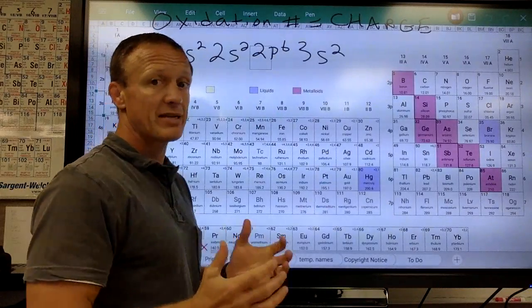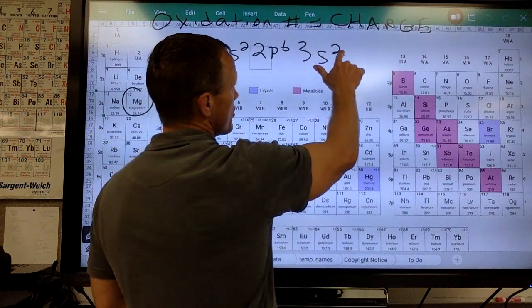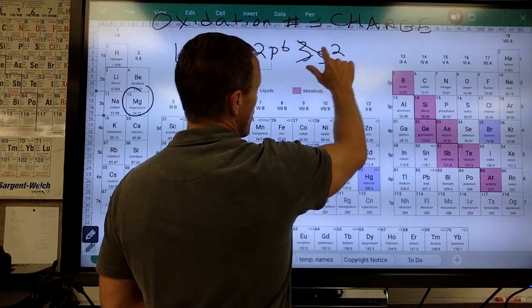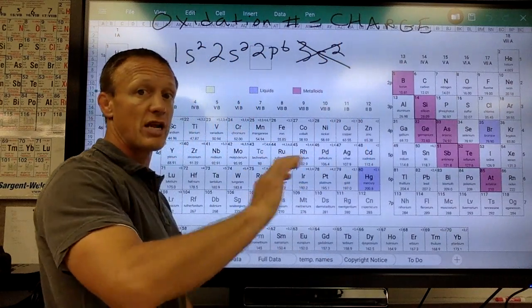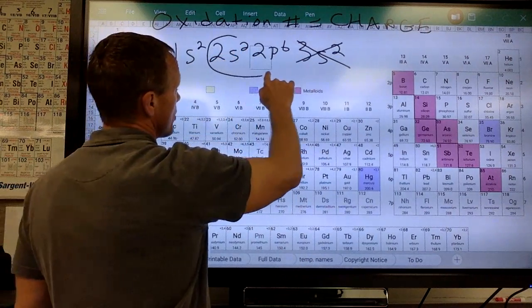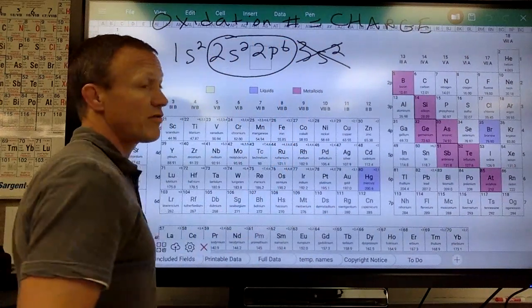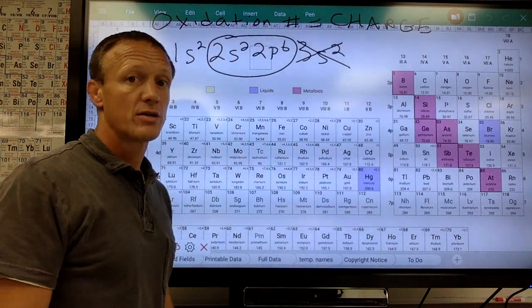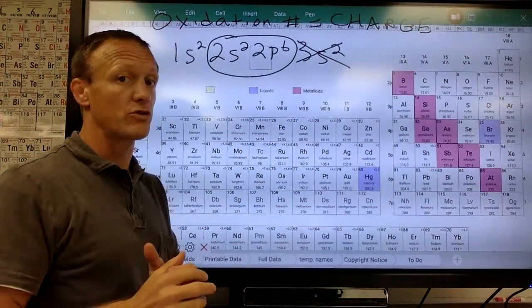So magnesium, again, it would have to gain six to get to eight. It tends to get rid of these two electrons. That means it empties out its whole outer energy level. So the energy level is now empty. Well, now look at its energy level that's left over. That energy level now has eight valence electrons in it. So magnesium tends to lose two electrons.